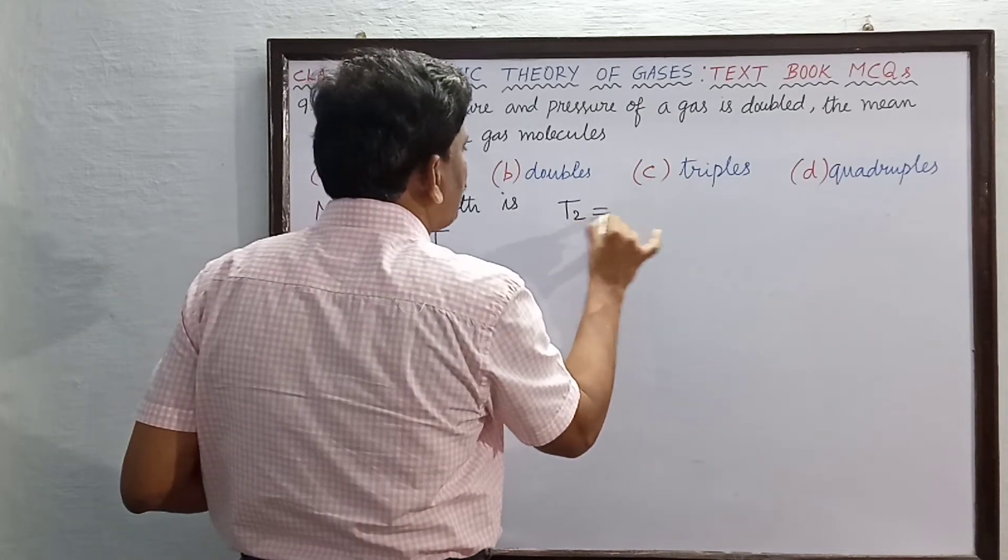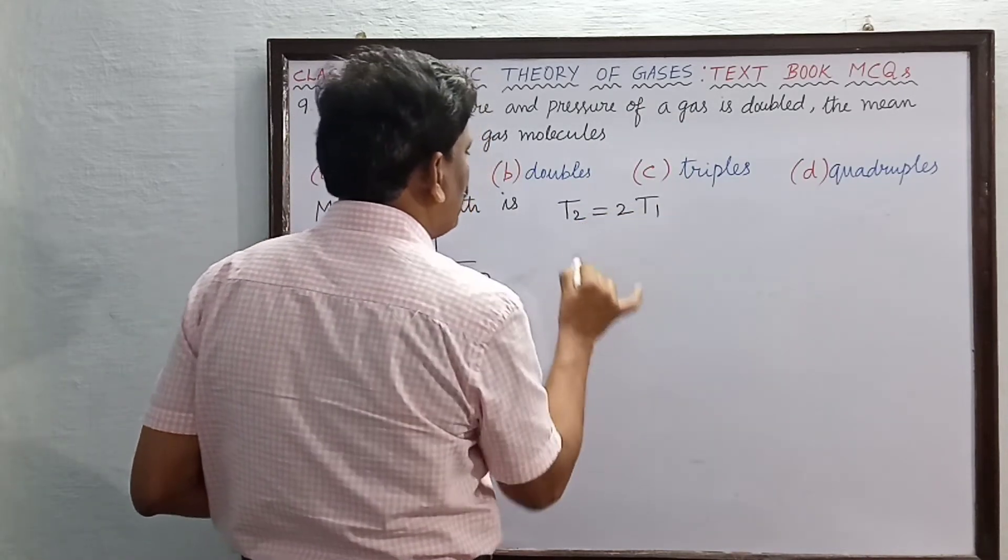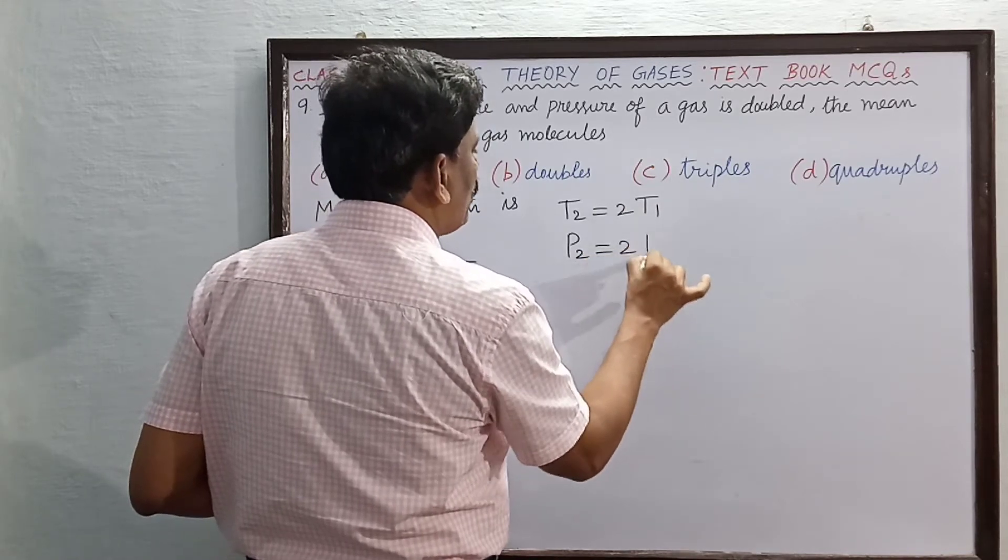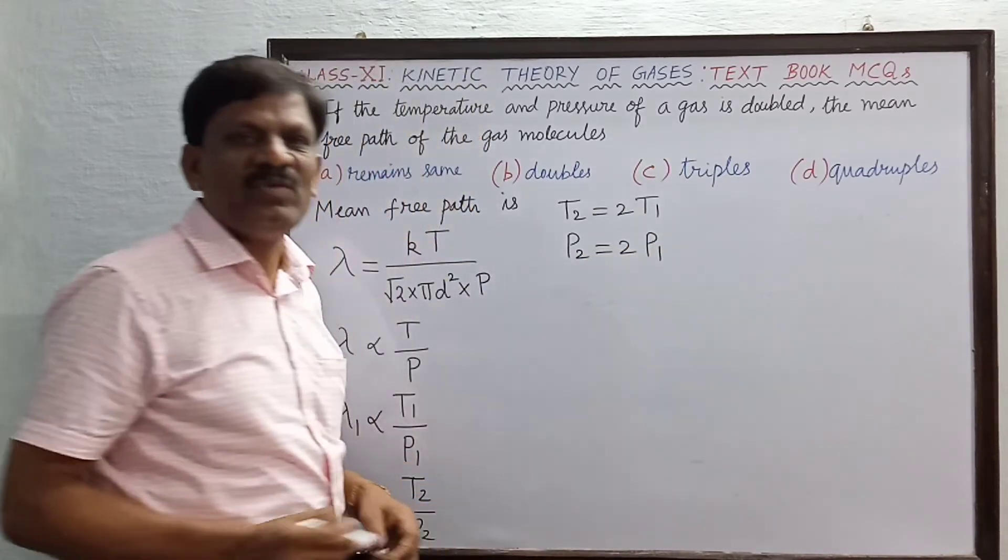T2 is equal to 2 times T1 and pressure P2 is equal to twice that of P1.